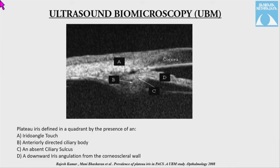On ultrasound biomicroscopy, plateau iris is defined by the presence of irido-angle touch, anteriorly directed ciliary body, absence of ciliary sulcus, and the iris taking a sharp angulation from the corneoscleral wall.